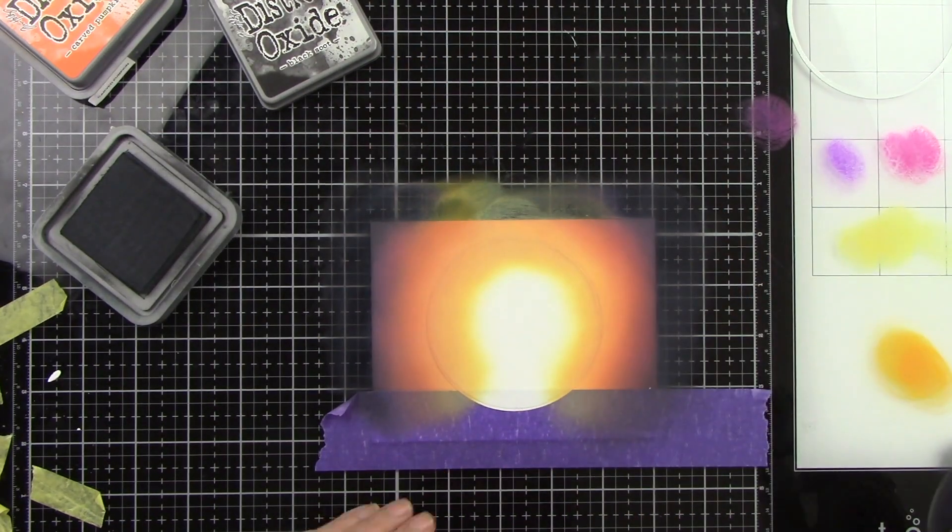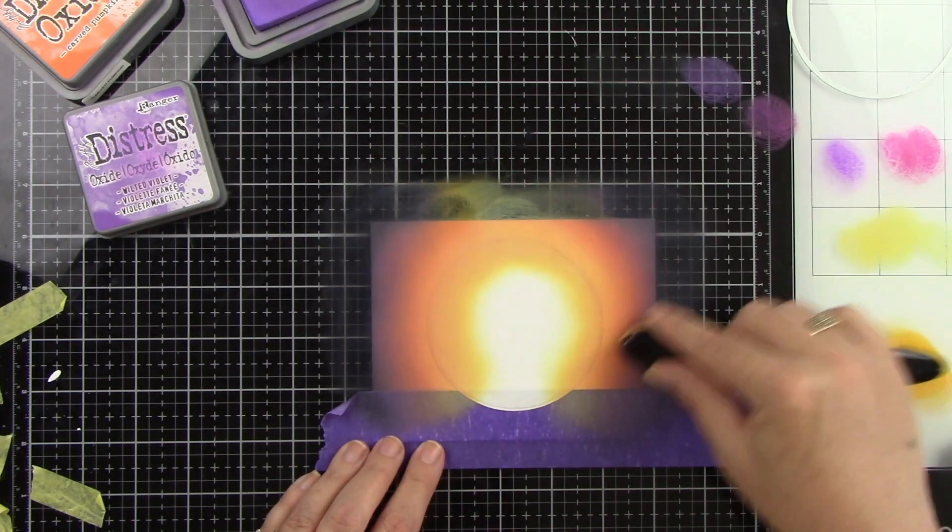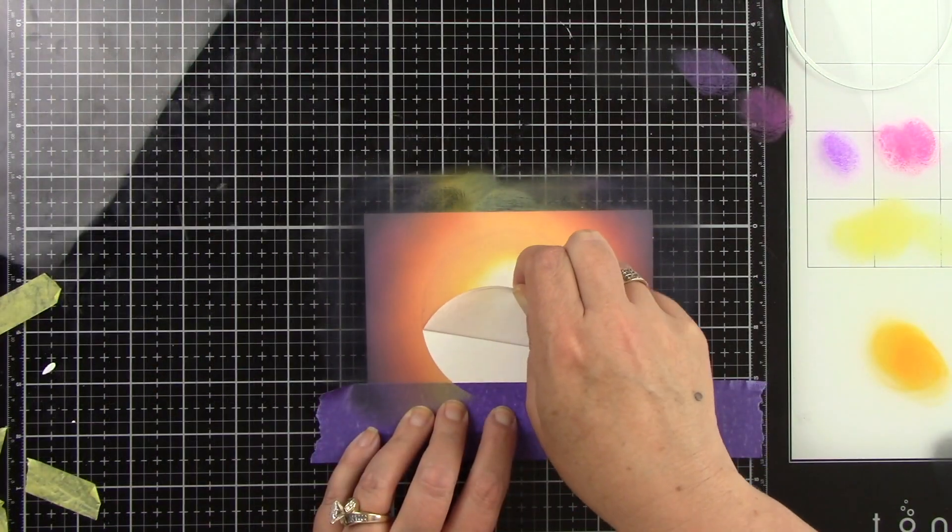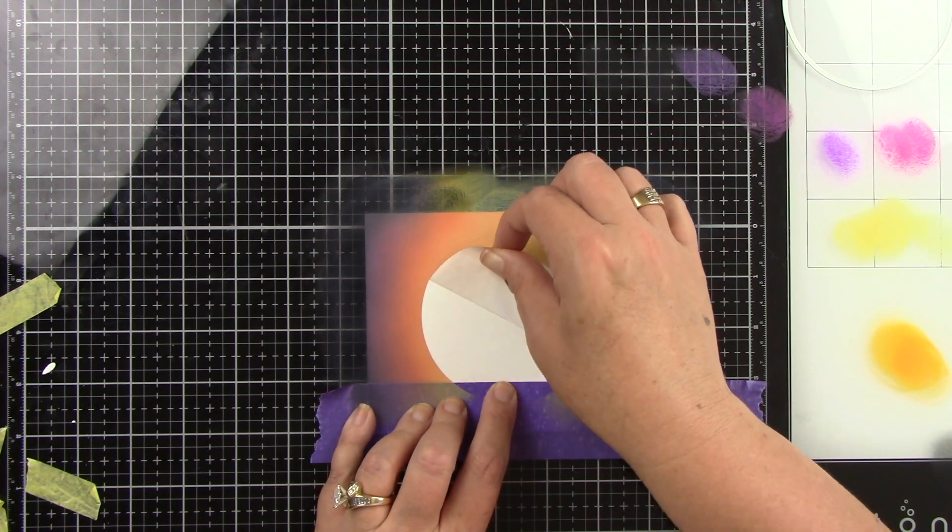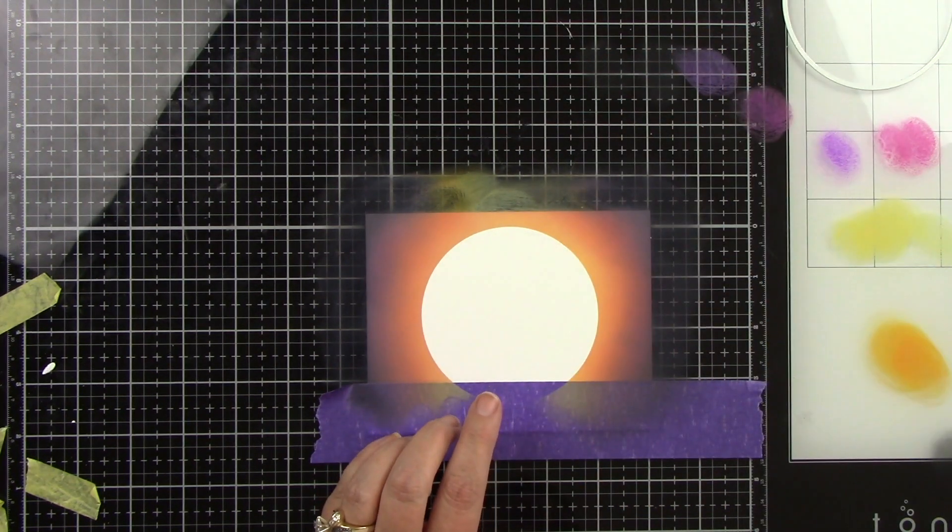I'm going to gently peel up this masking paper because now I want to go ahead and ink blend the moon. I'm just going to peel that up gently and then we have this nice big open circle and it's going to be a huge moon.